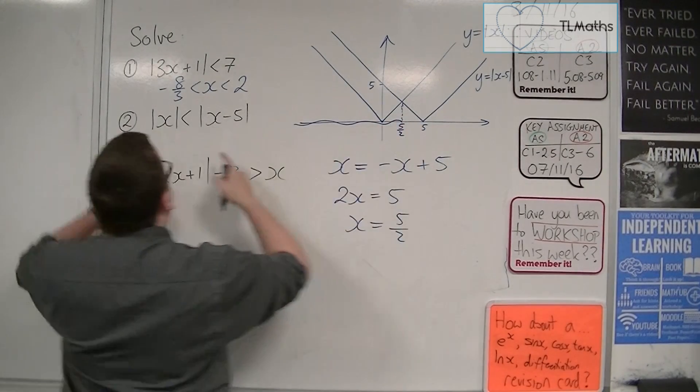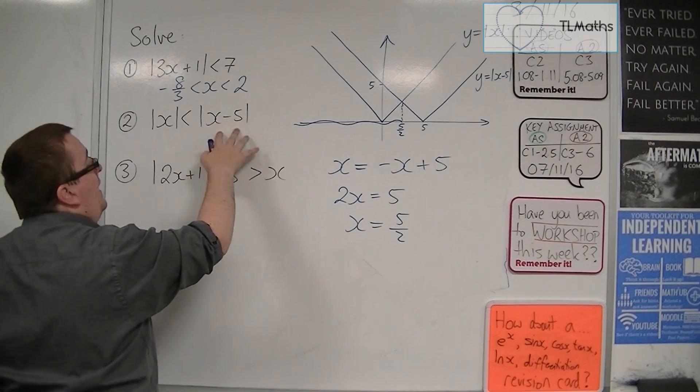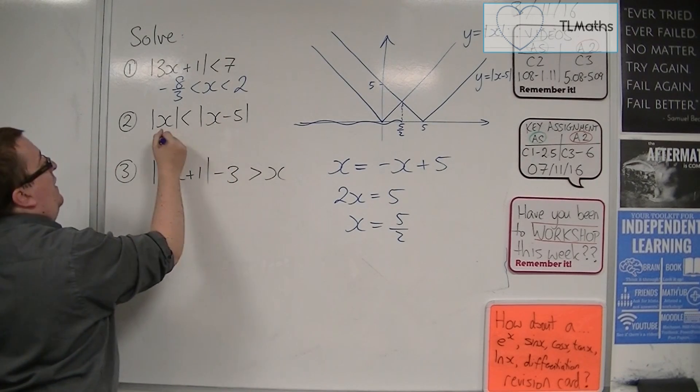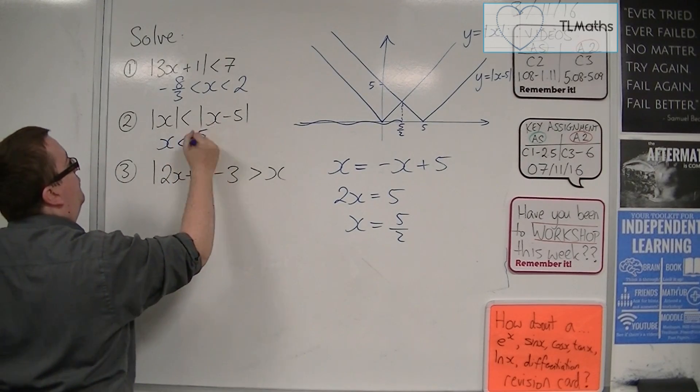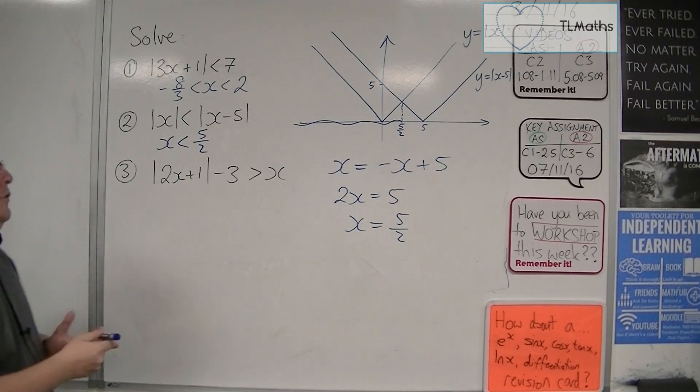So that is 5 halves. And so in order for the mod x to be less than mod of x minus 5, x has to be less than 5 halves. And that solves that one.